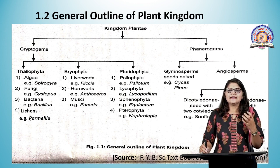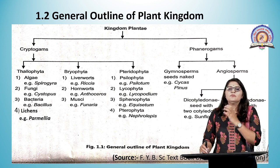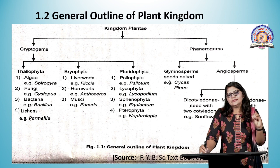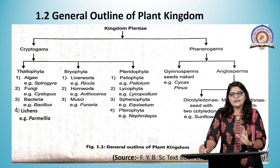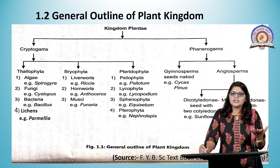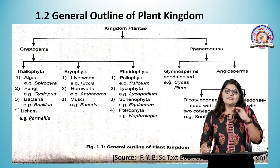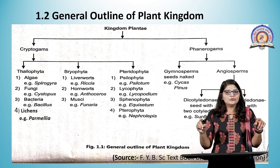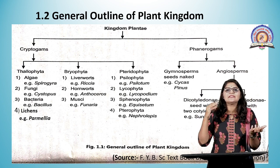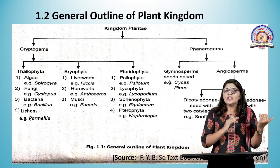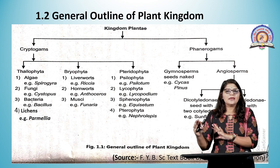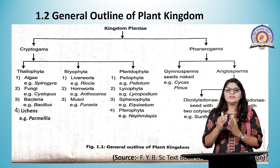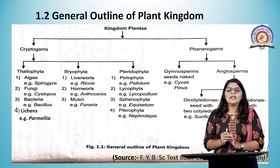This is the general outline classification of the plant kingdom. Kingdom Plantae is divided into two groups: Cryptogames and Phanerogames. Cryptogames are non-flowering, non-seed-bearing plants, while Phanerogames bear well-developed seeds and flowers. Within Cryptogames, gametes are hidden within the gametophytic plant body — these are flowerless and seedless plants that reproduce with the help of spores. Cryptogames are further divided into Thallophyta, Bryophyta, and Pteridophyta.